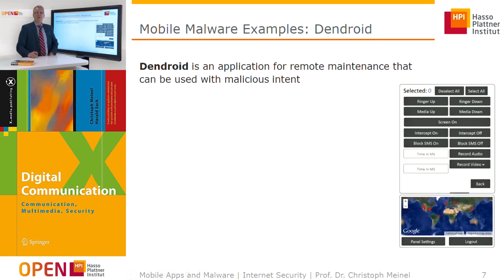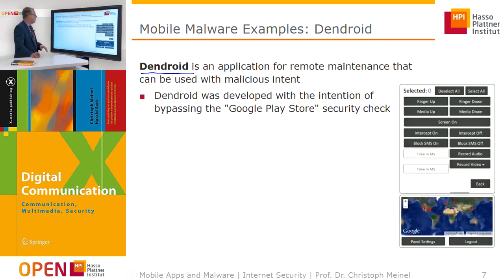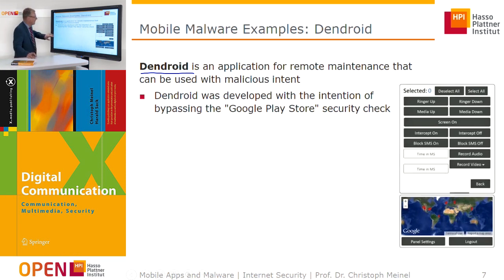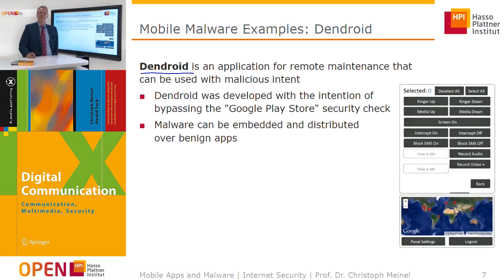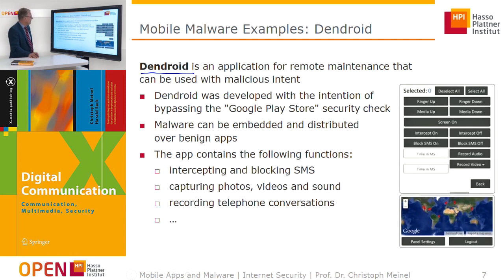For example, Dendroid is an application for remote maintenance that can be misused with malicious content. Dendroid was developed with the intention of bypassing the Google Play Store security check, meaning malware can be embedded and distributed over benign apps. The Dendroid app includes functions to intercept and block SMS, capture photos, capture videos and sound, record telephone conversations, and spy on the user.